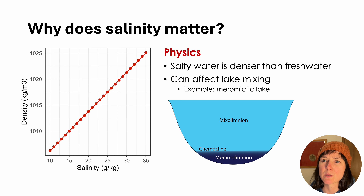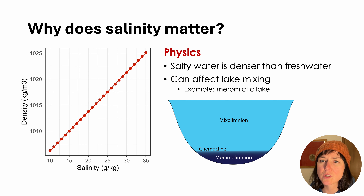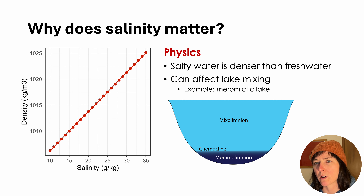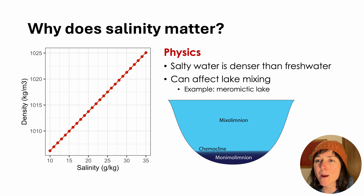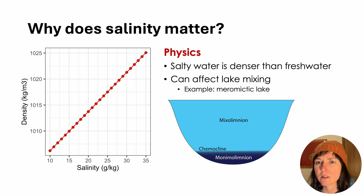At the extreme end of the spectrum, a lake can become meromyctic, where a layer of salty bottom water can't mix with the freshwater above it. Oceanographers traditionally have studied salinity to a much greater extent than limnologists, because along with temperature, salinity drives ocean circulation, which influences our planet's climate.